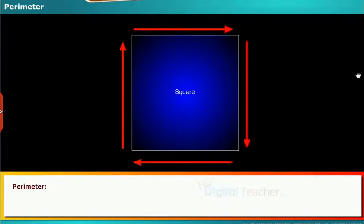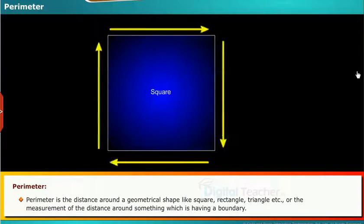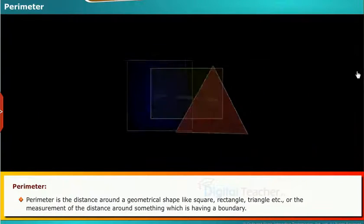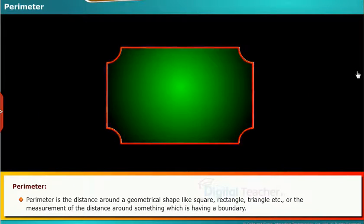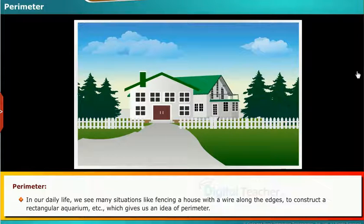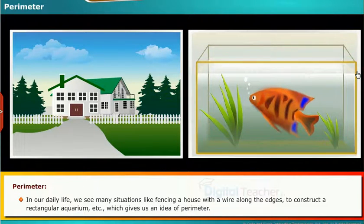Here, we shall learn what is perimeter. Perimeter is the distance around a geometrical shape like square, rectangle, triangle, etc., or the measurement of the distance around something which is having a boundary. In our daily life, we see many situations like fencing a house with a wire along the edges to construct a rectangular aquarium, etc., which gives us an idea of perimeter.